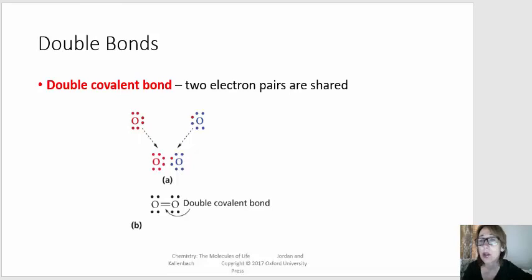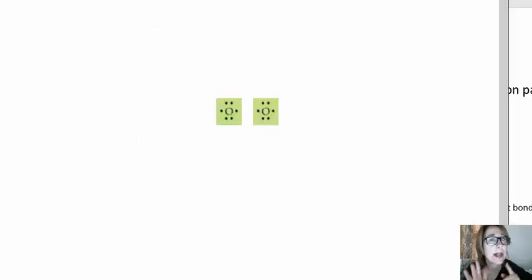We're going to use oxygen as our example. Oxygen has six valence electrons, two pairs and two unpaired electrons. If we form a single bond between oxygen, we still have an unpaired electron on each oxygen, and each oxygen hasn't fulfilled the octet rule. If we count the number of electrons around oxygen after the single bond is formed,